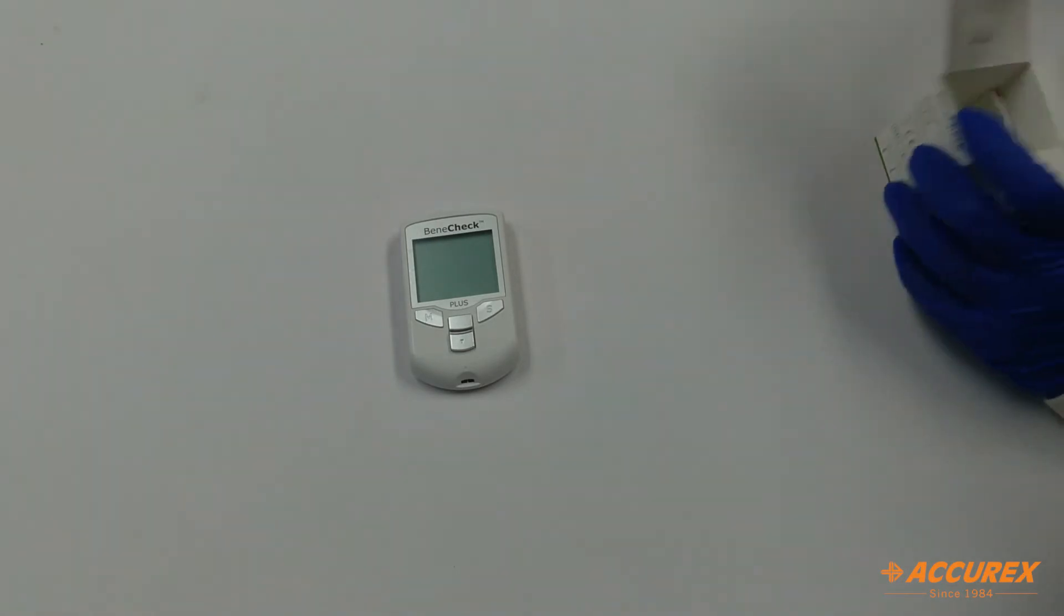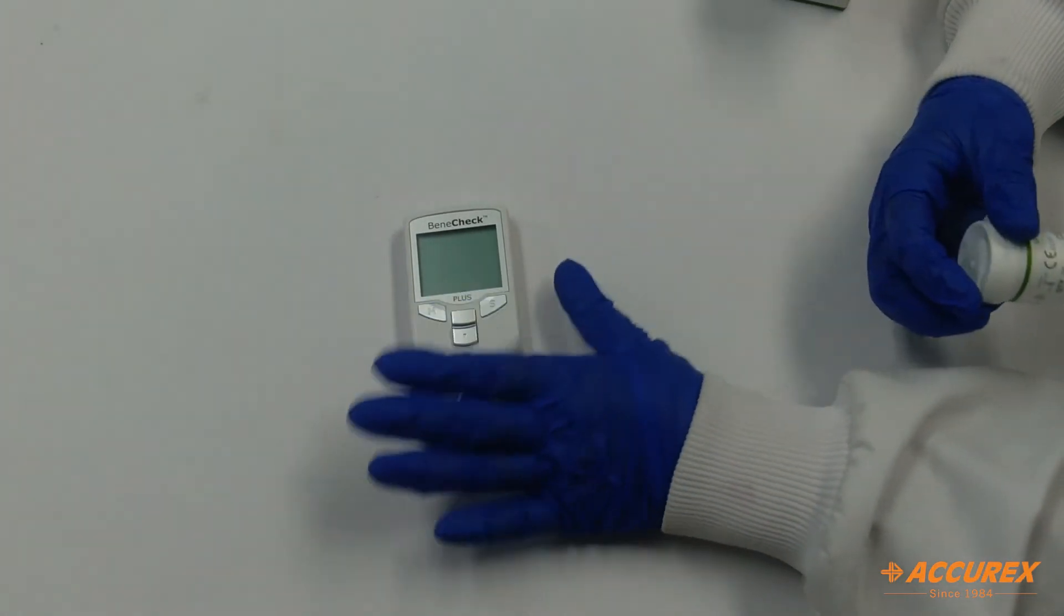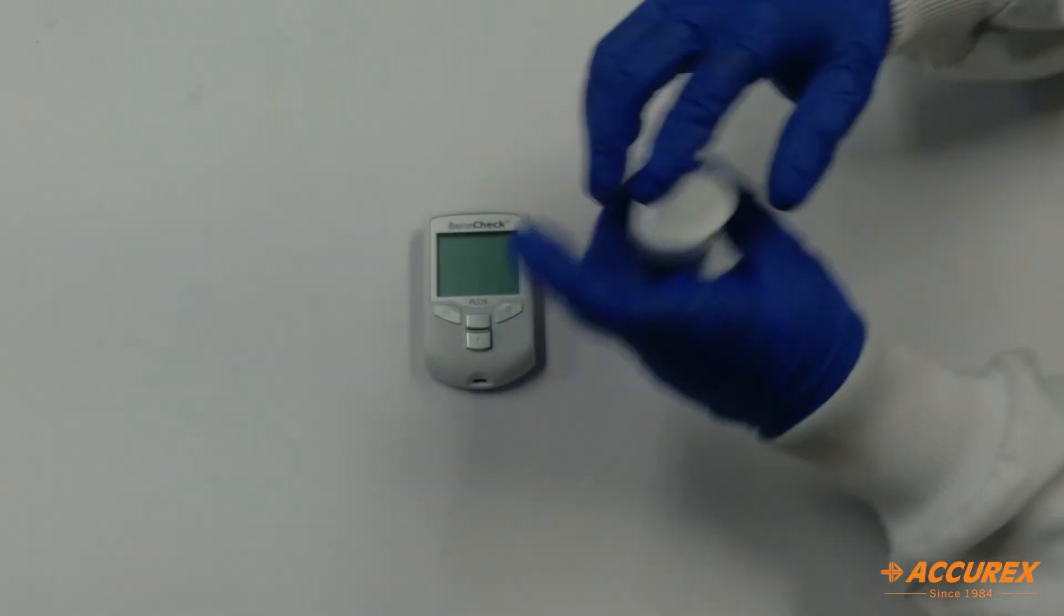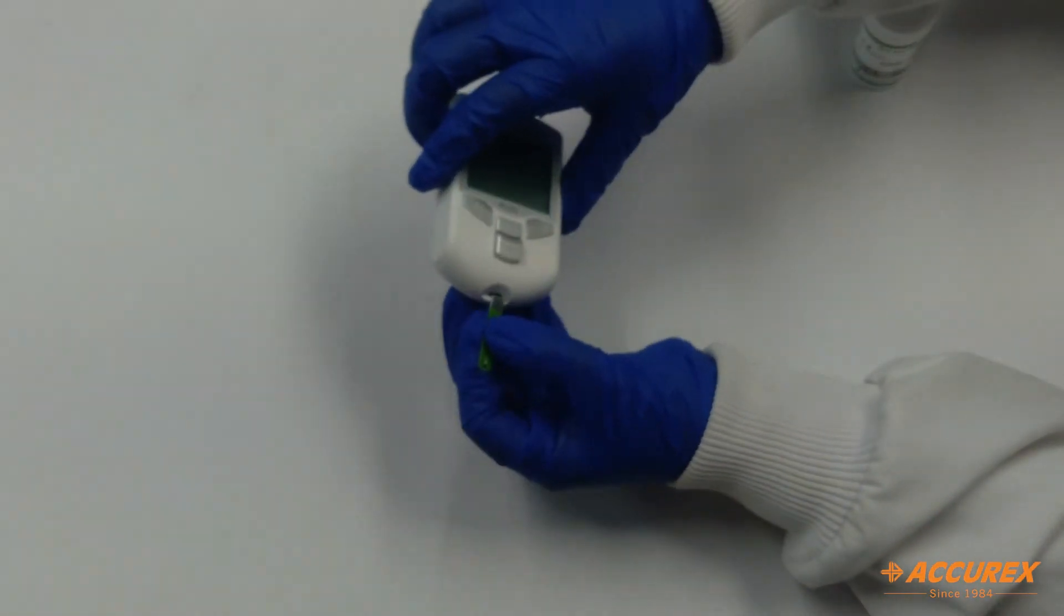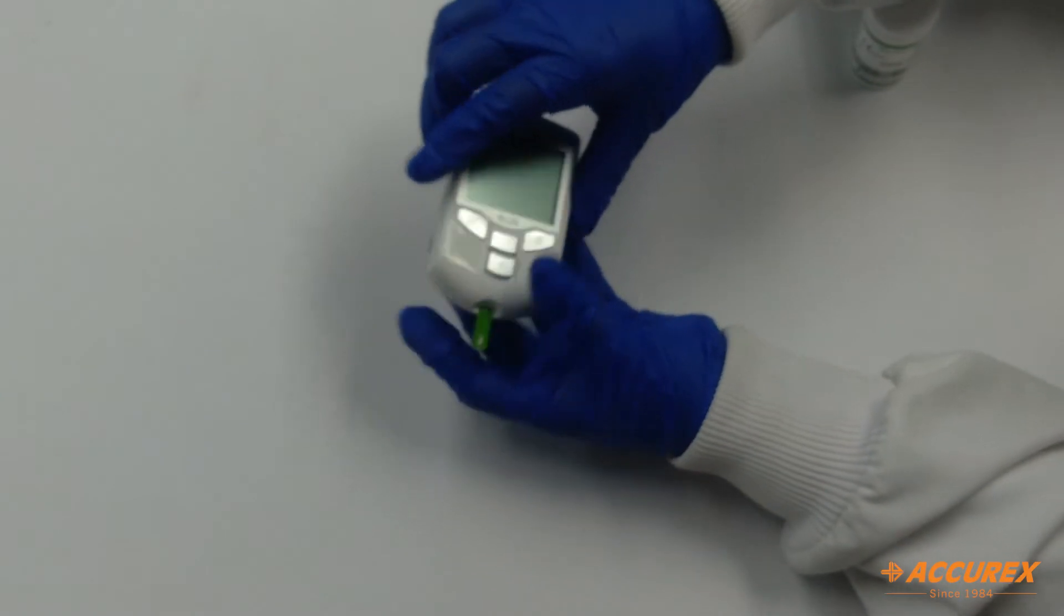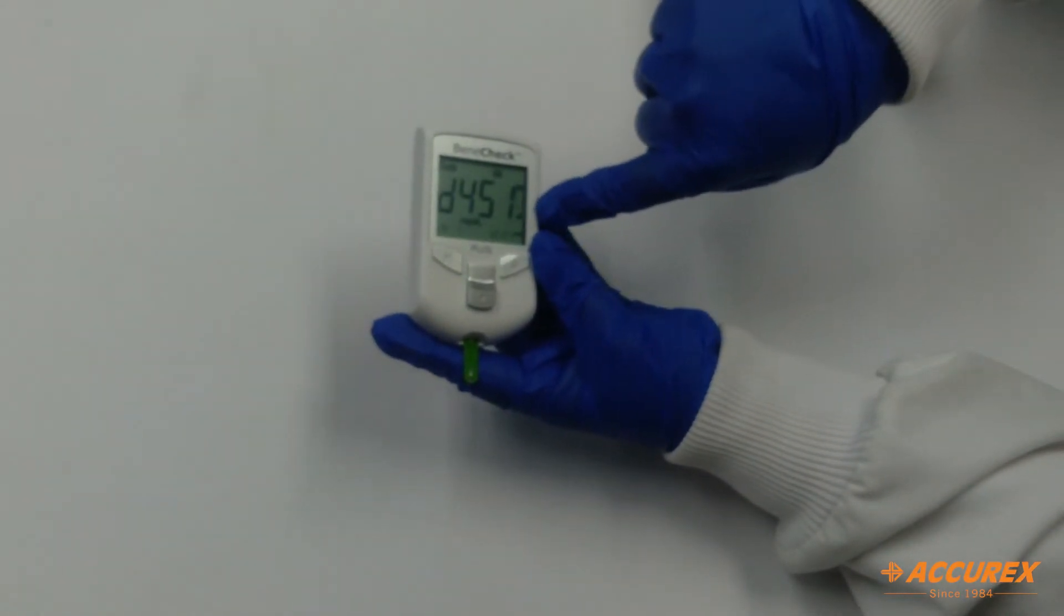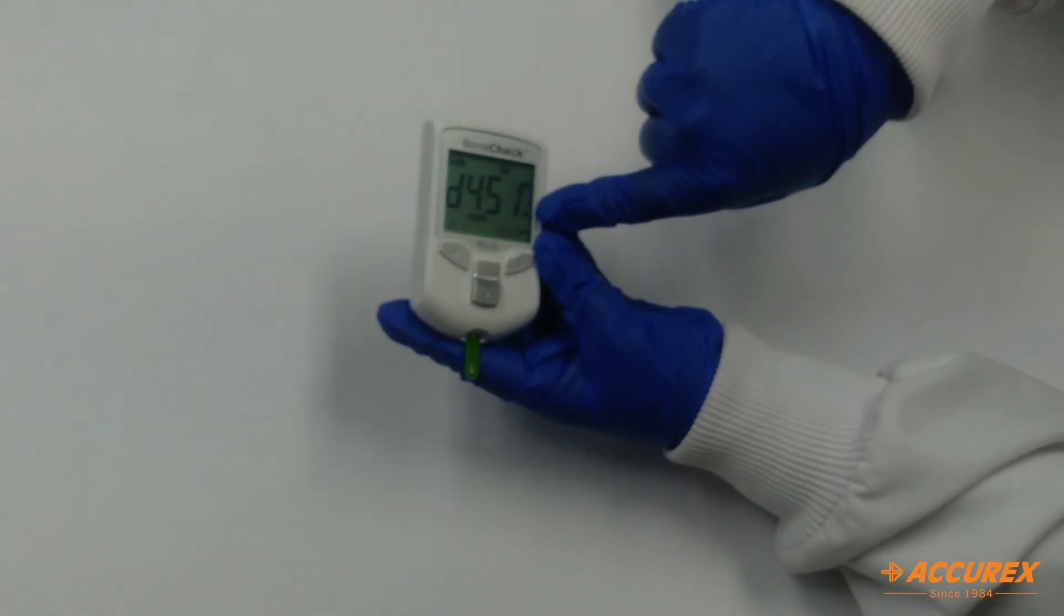When you remove the code chip the meter will switch off. As you insert the strip the meter will switch on. You will insert the strip like this and then it will prompt to put the blood sample.